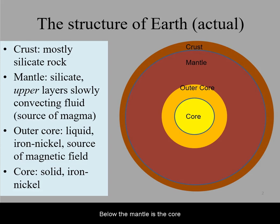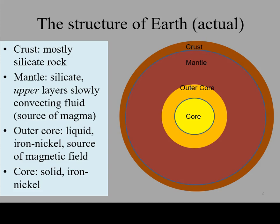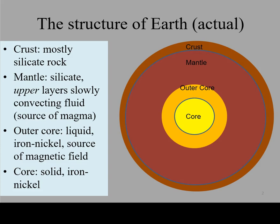Below the mantle is the core. The core is made of iron and nickel. The core itself is divided into an outer core and an inner core. The outer core is hot, dense, and liquid.